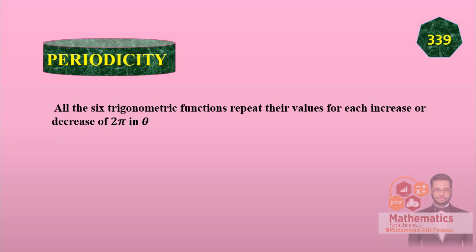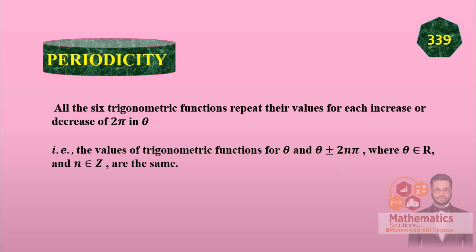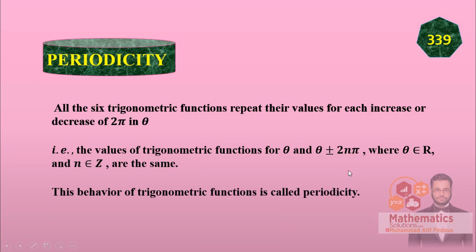Now you have to write this example: the value of the trigonometric functions for theta and theta plus 2n pi are the same. As soon as you say theta plus 2n pi or minus 2n pi, the angle values remain the same. This behavior of trigonometric functions is called periodicity.